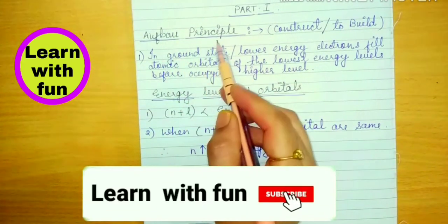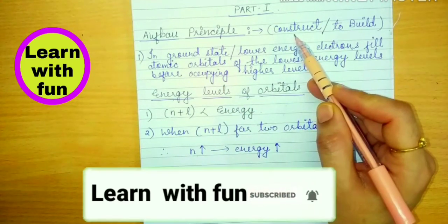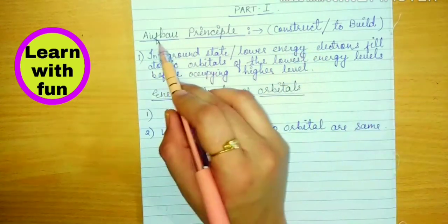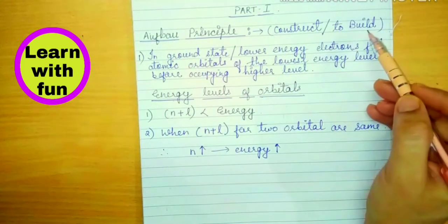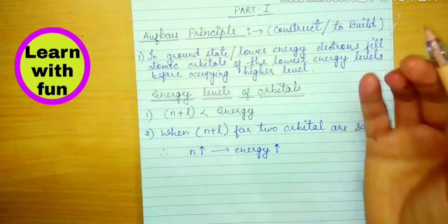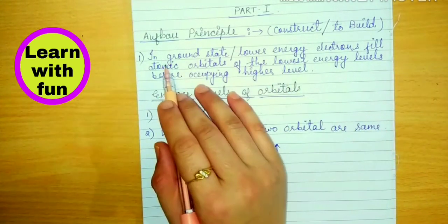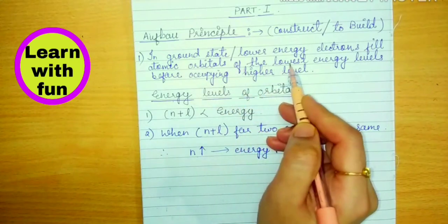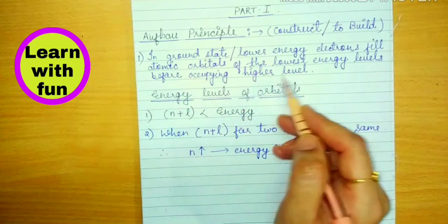So this is Aufbau principle and what is the meaning of Aufbau? Aufbau is a German word, it's not a name of any scientist and the meaning of that Aufbau is to construct or to build. So in ground state, lower energy electrons fill atomic orbitals of the lowest energy level before occupying higher energy level.